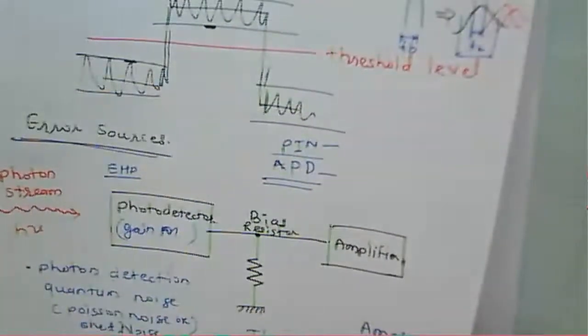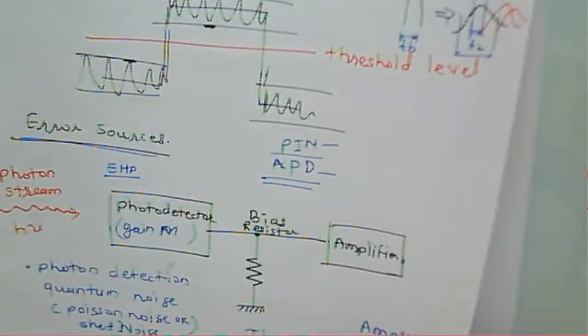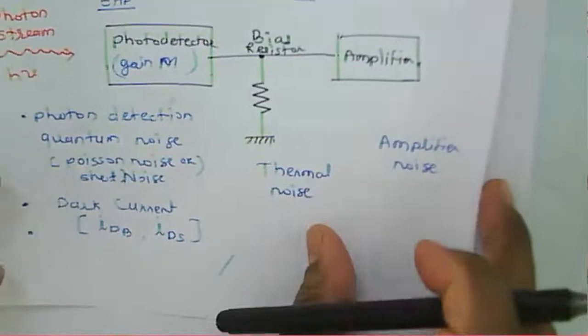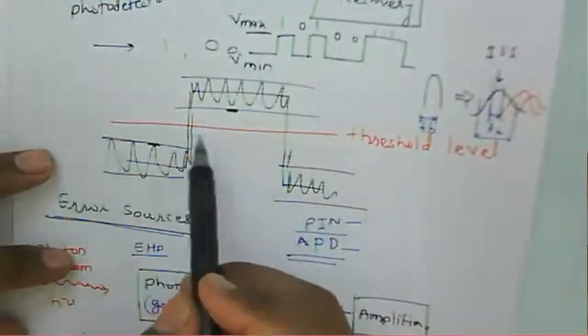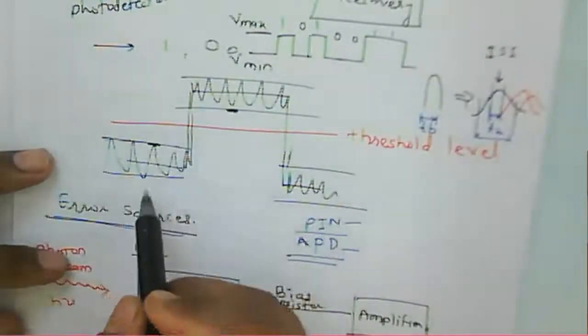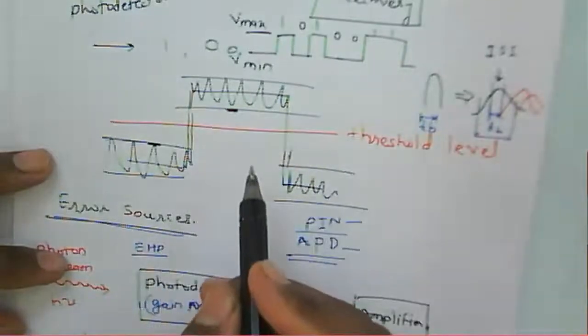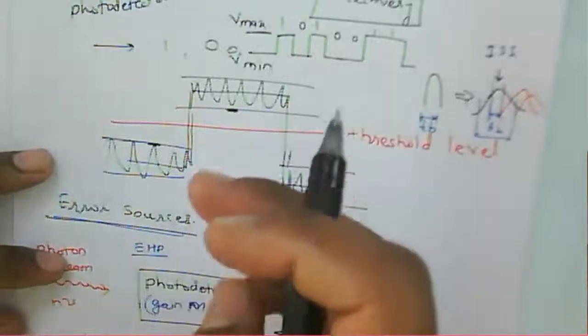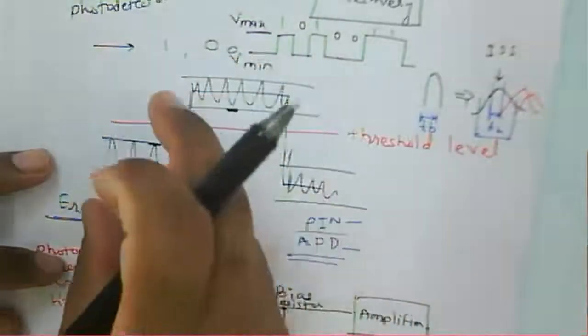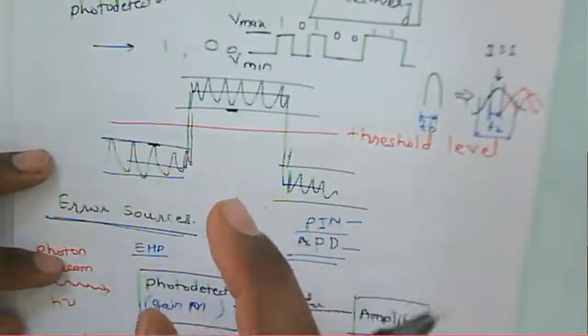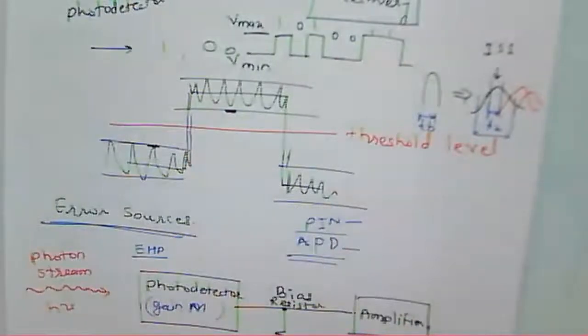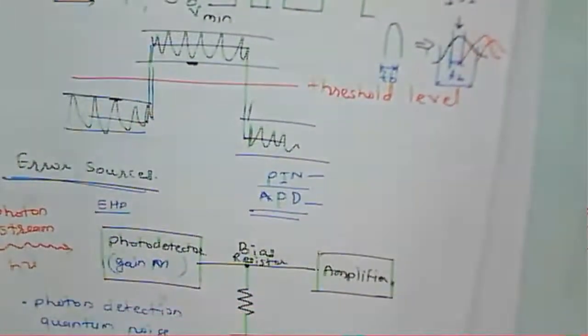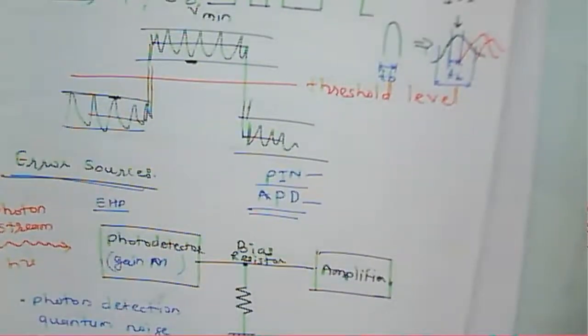We will consider one by one the factors and components of the optical receiver, because we need to discuss the performance of a receiver. The performance depends on whether we correctly receive a one bit when we transmit one, and a zero bit when we transmit zero. According to that we can define the probability of bit error. Today we have learned about the various noises and various noise sources at the optical receiver.